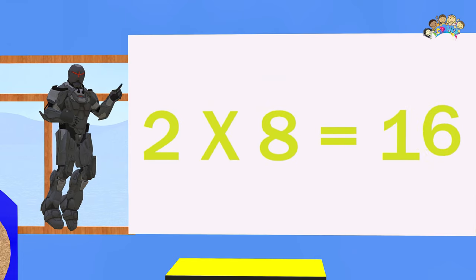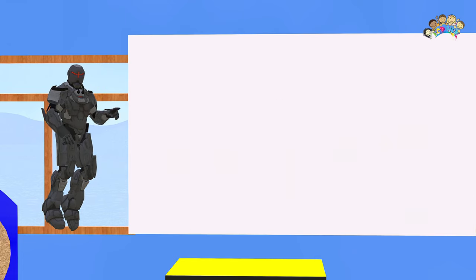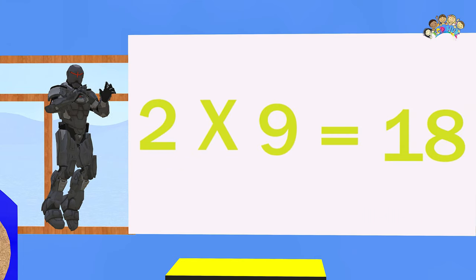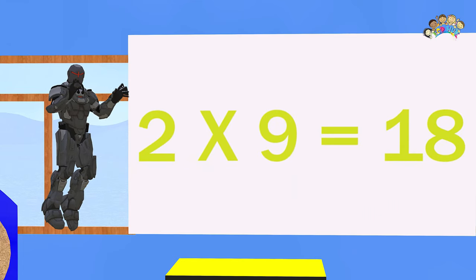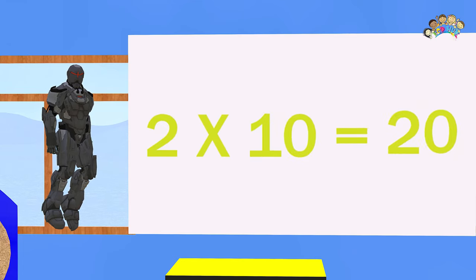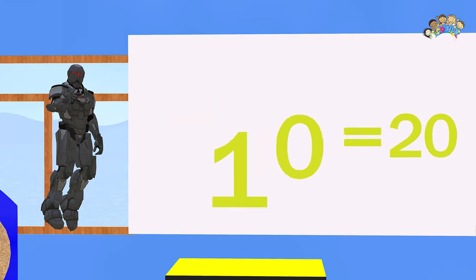Two times eight equals sixteen. Two times nine equals eighteen. Two times ten equals twenty.